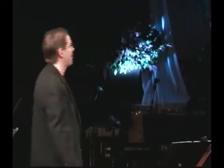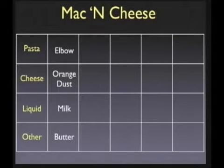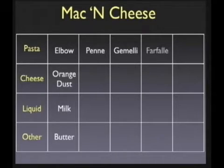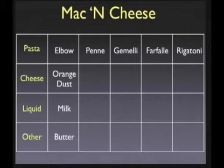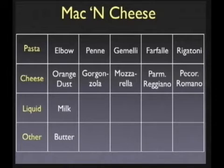One thing you can do is take the component parts of something and ask: How could I do each one of these parts differently? In our illustration of mac and cheese, you've got four parts. Pasta — are there other pastas besides elbow macaroni? Yes. Penne, gemelli, farfalle, rigatoni — there are all kinds. When it comes to cheese, you can use something other than orange dust: gorgonzola, mozzarella, parmigiano-reggiano, pecorino-romano, French cheeses, American cheeses, or a combination. When it comes to the liquid, you could use milk, half and half, whole cream, chicken stock, or even wine.